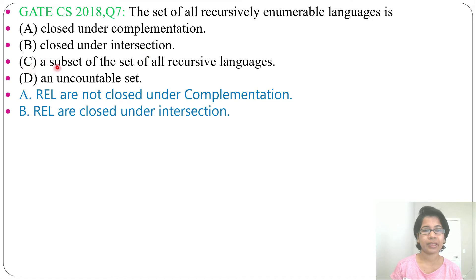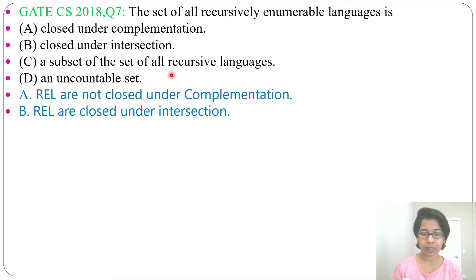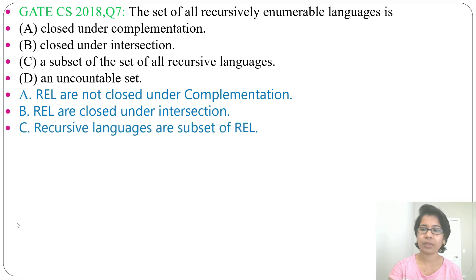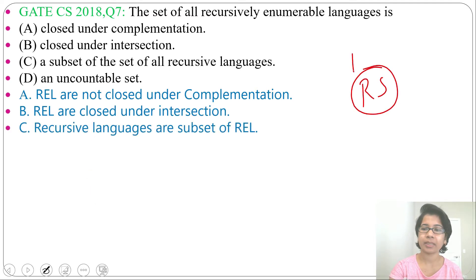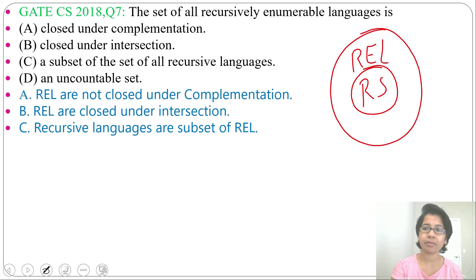Option C: a subset of the set of all recursive languages. Recursive set is a subset of recursive enumerable, but here the opposite is given, that's why this is false. Actually, recursive language is a subset of recursive enumerable language, that's why this option is false.